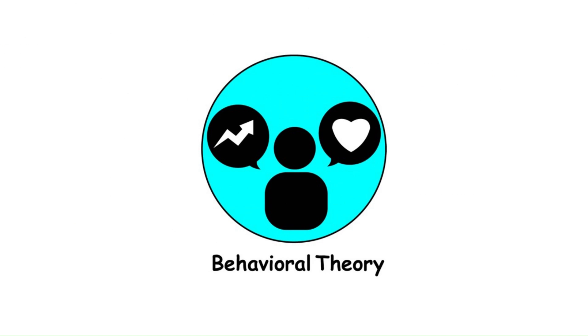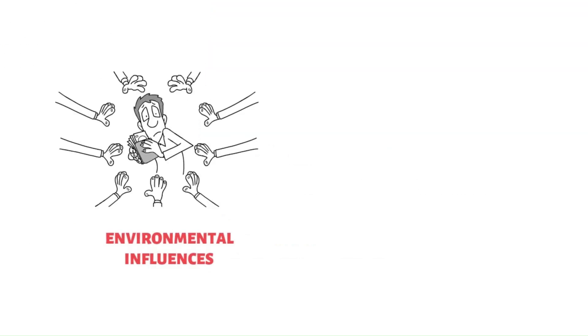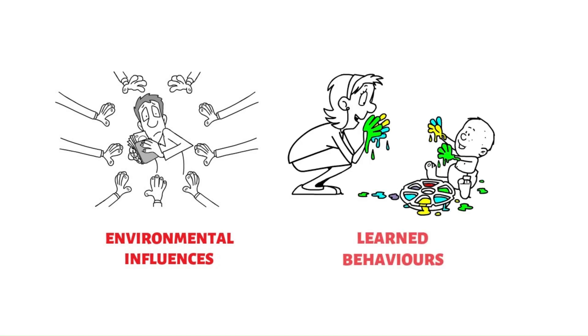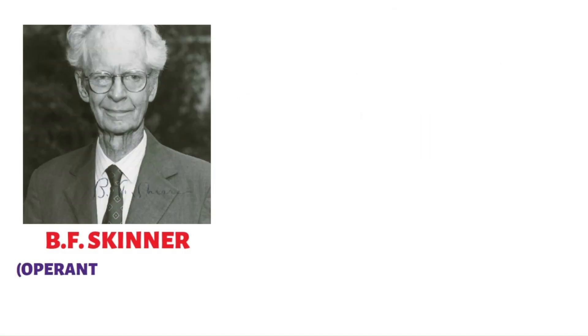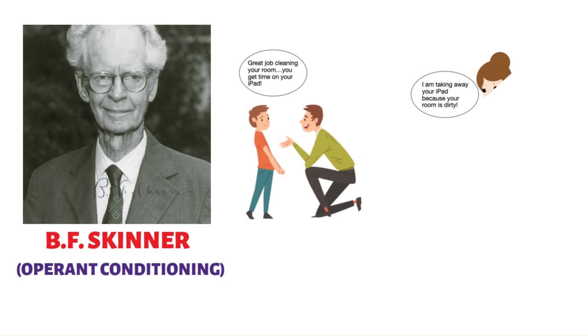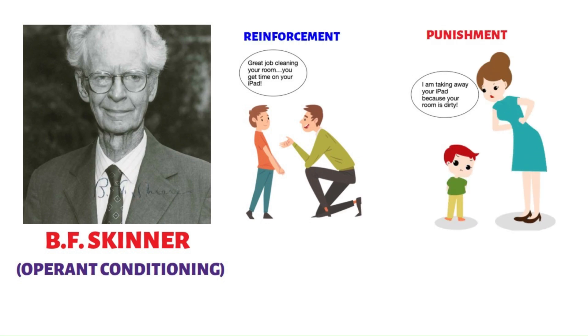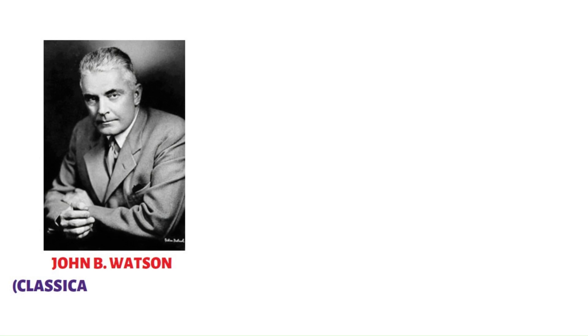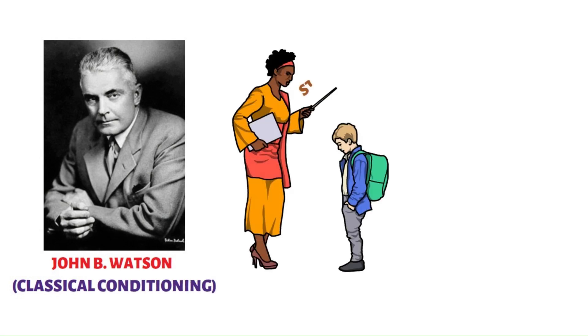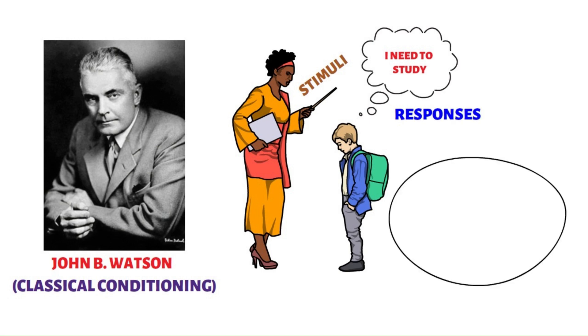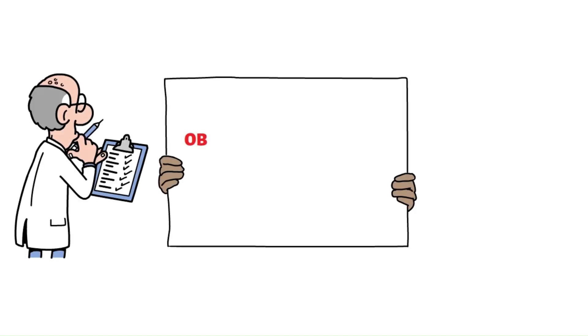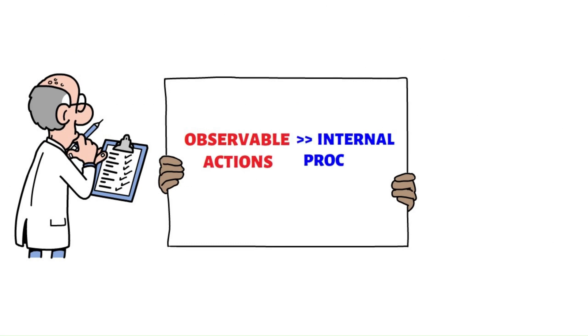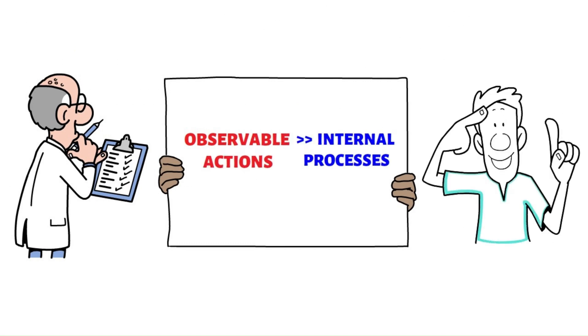Behavioral Theory suggests that personality is shaped by environmental influences and learned behaviors. B.F. Skinner introduced operant conditioning, emphasizing the role of reinforcement and punishment in behavior, while John B. Watson focused on classical conditioning, demonstrating how associations between stimuli and responses influence personality development. Behavioral theorists prioritize observable actions over internal processes in understanding personality.